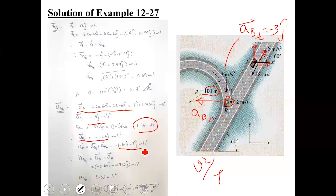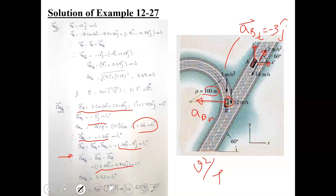Applying the relative acceleration equation — ABA equals AB minus AA — gives the relative acceleration vector ABA equal to minus 2.44i minus 4.732j. From this, you can find the magnitude and direction of the relative acceleration vector.